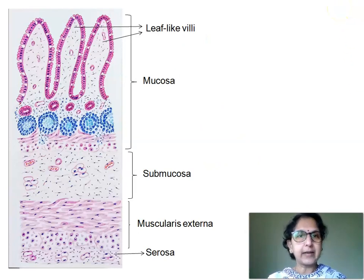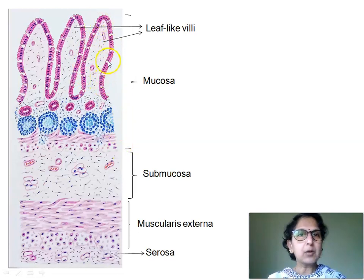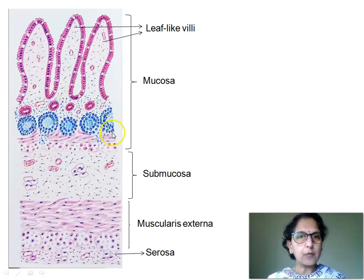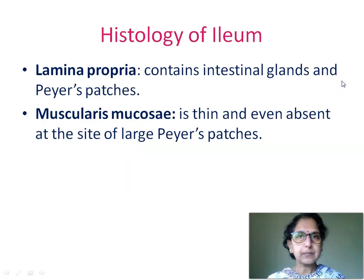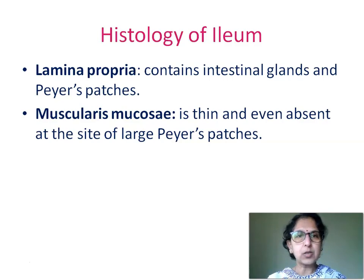Here is the diagram of histology of ileum. The mucosa shows lining epithelium — simple columnar epithelium with numerous goblet cells. Lamina propria shows intestinal glands or crypts of Lieberkühn. In the lower part of the mucosa we see Peyer's patches, which are the characteristic features of histology of ileum, and lowermost we see the muscularis mucosae. The muscularis mucosae is thin and even absent at the site of a large Peyer's patch.